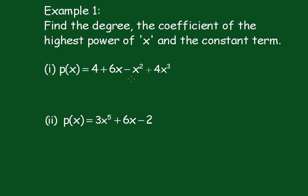The coefficient is the number of the highest power of x. So the coefficient is 4, and the constant term, the term with no x in it, is also 4. The constant term is 4.